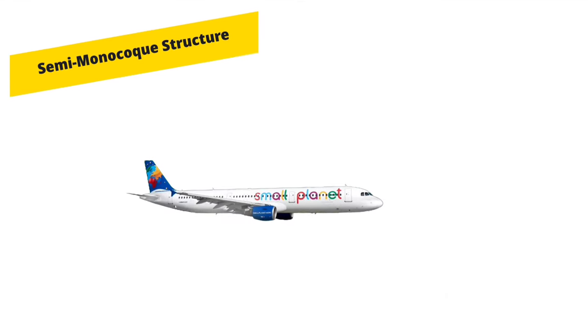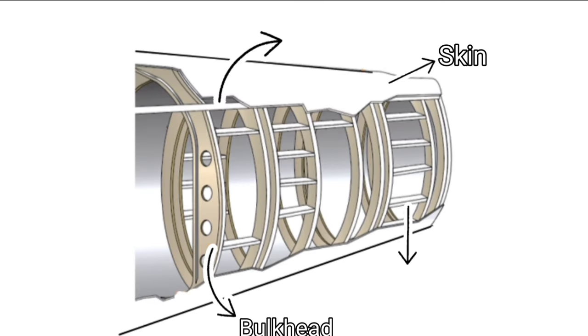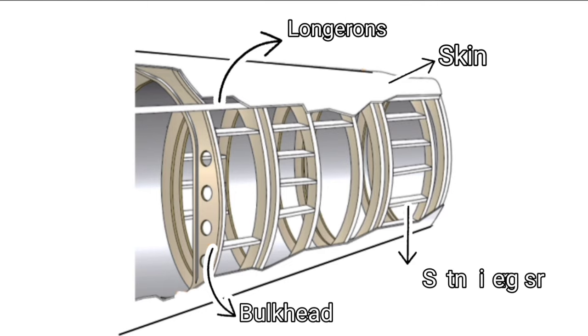Semi-monocoque structure is most widely used structure in this era. To overcome the problems of monocoque structure, semi-monocoque structure is used. It contains longerons and stringers added to monocoque structure.